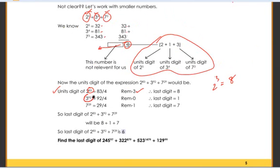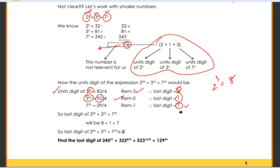The last digit of 3 power 92: the units digits of powers of 3 also have a cyclicity of 4. Dividing 92 by 4, the remainder is 0, so the last digit is the last digit of 3 power 4, which is 1. Similarly, for 7 raised to 29, the cyclicity is 4. Dividing 29 by 4, the remainder is 1, so the last digit is 7.